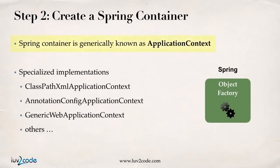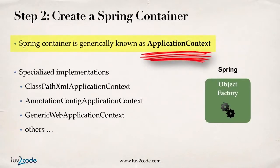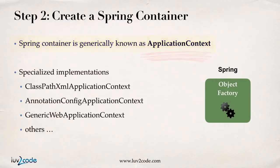Step two is creating a Spring container. In the Spring world, a Spring container is generally known as an application context — that's the term you'll see a lot in Spring documentation and apps. They have specialized implementations: one for reading XML from the class path, annotation config, web application context, and so on. We'll take a look at all of these in this course.